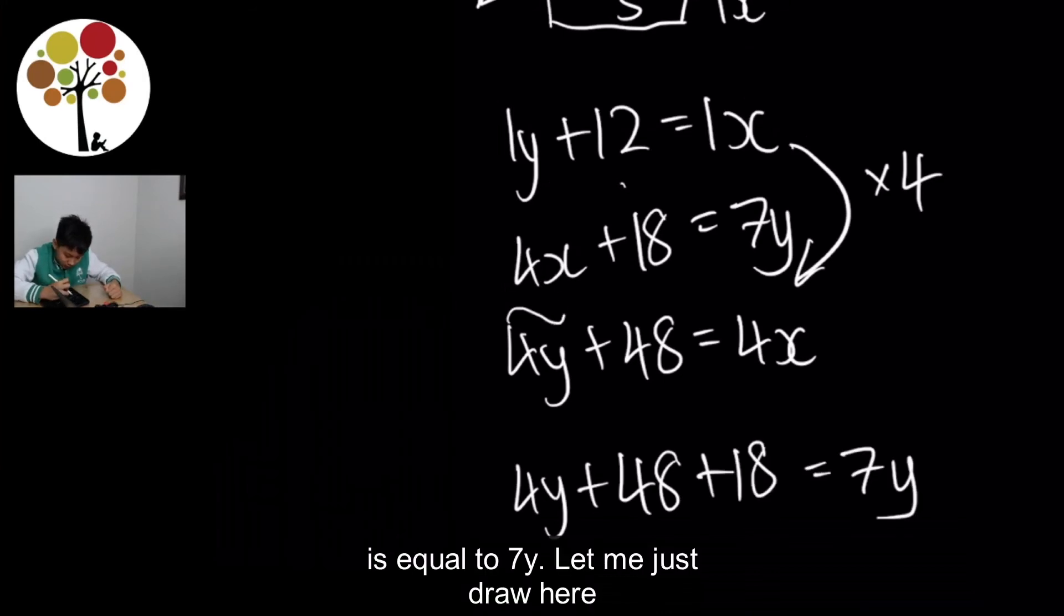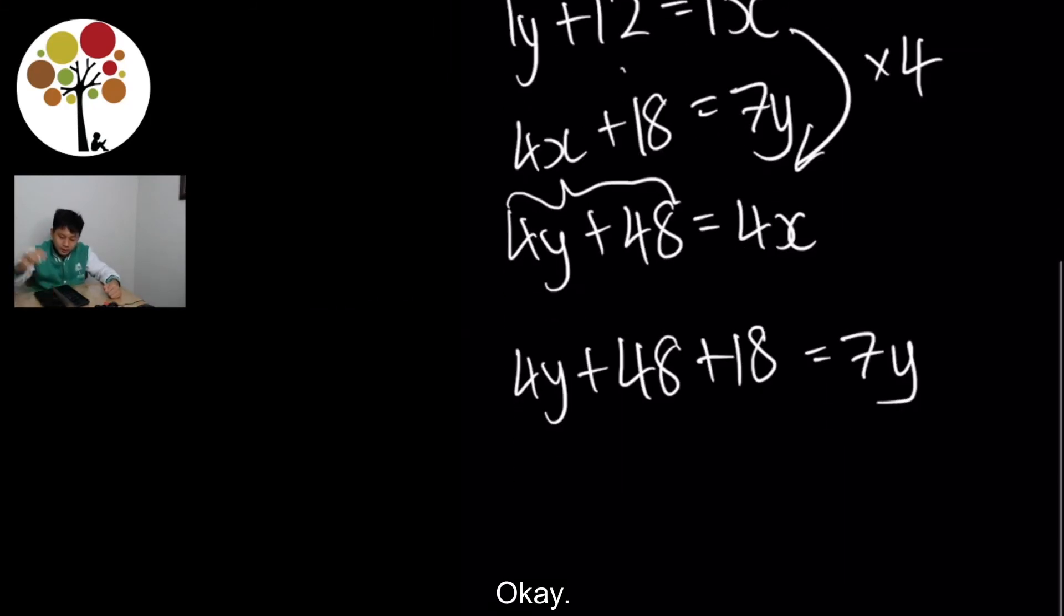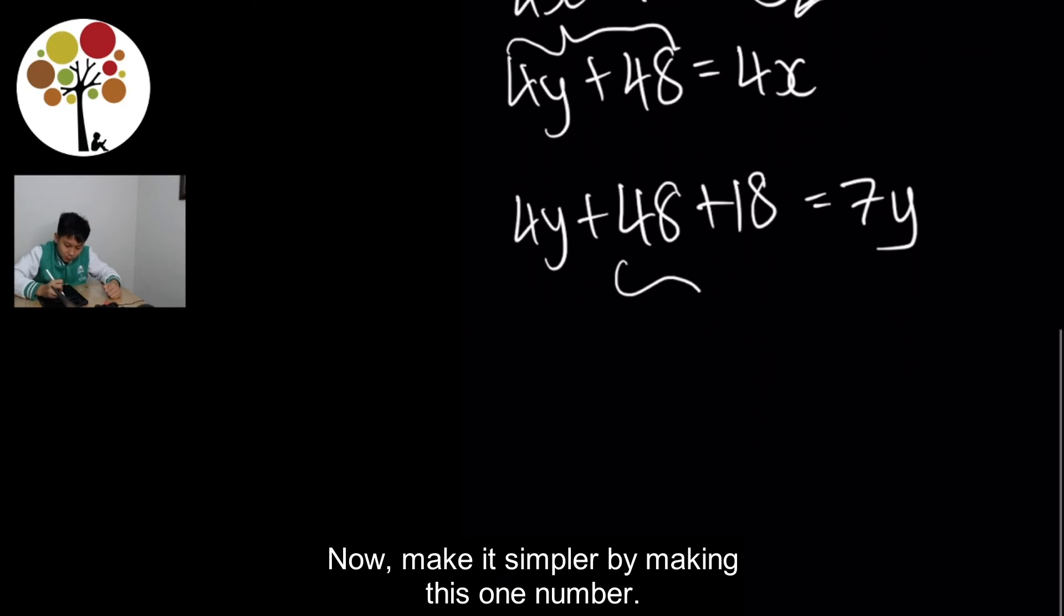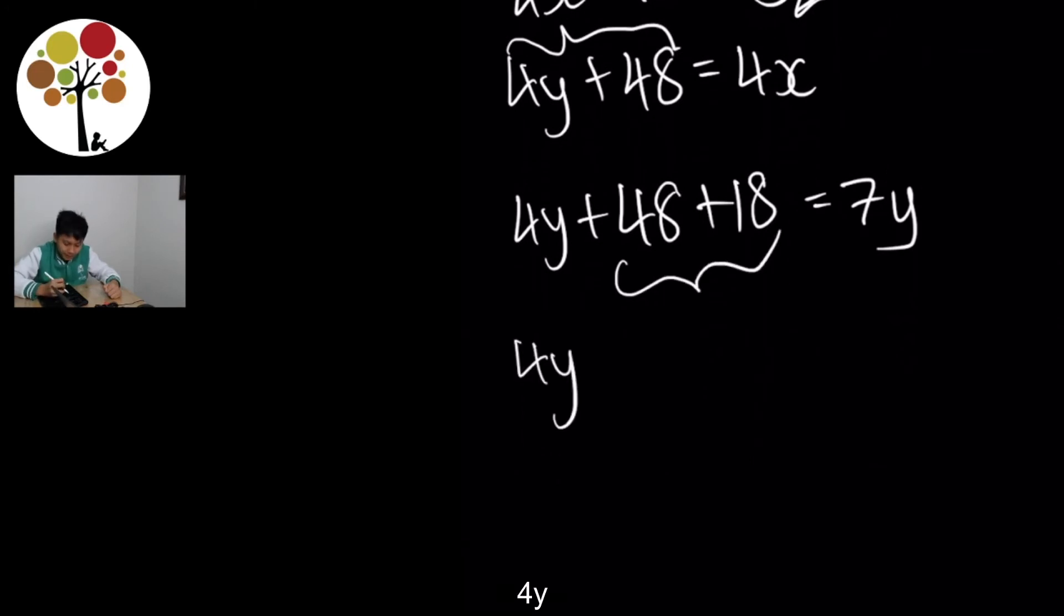So now we combine it together. It becomes 4Y plus 48 plus 18 is equal to 7Y. Let me just draw here for X. Okay. Now, make it simpler by making this one number. 4Y plus 66 is equal to 7Y.